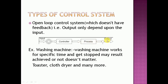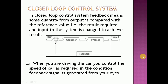An example of an open loop control system is a washing machine. It stops after a fixed time interval; it doesn't matter whether the result is achieved or not. Other examples include a toaster, a clothes dryer, and many more. Now, the next type of control system is the closed loop control system.